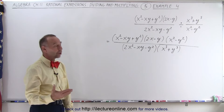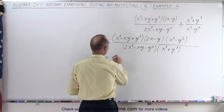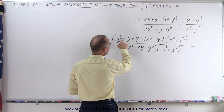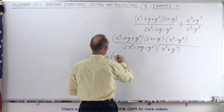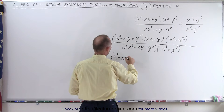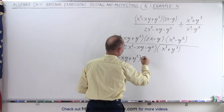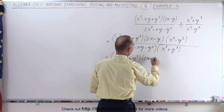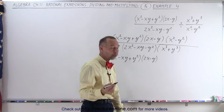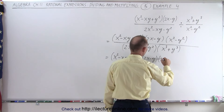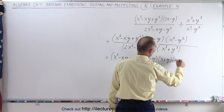Now I can go ahead and start factoring. First, notice I'm missing a 2 here, so x squared minus xy plus y squared cannot be factored — we leave that as is. The term 2x minus y also cannot be factored. And here we have the difference of squares, so x squared minus y squared can be written as x plus y times x minus y.